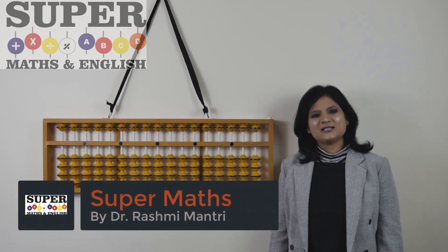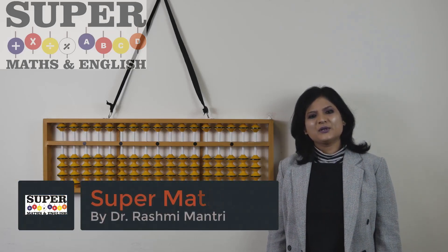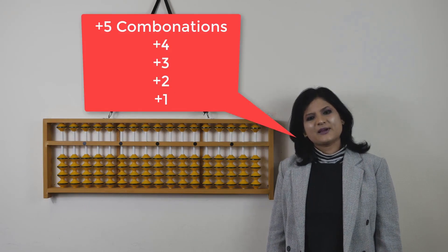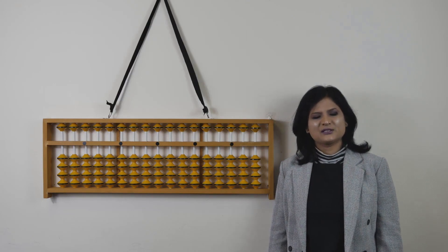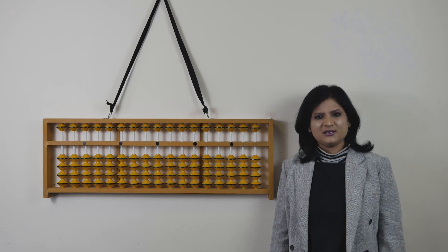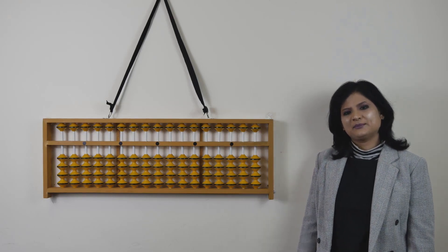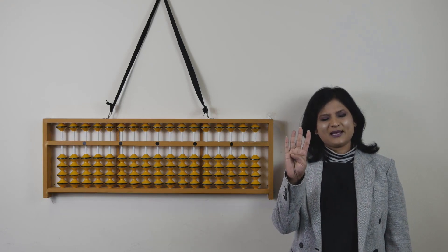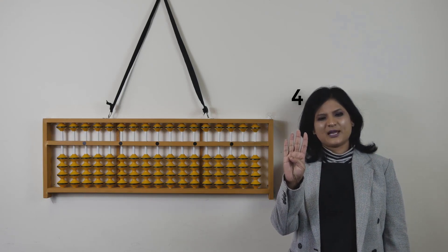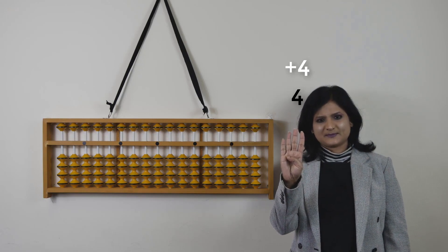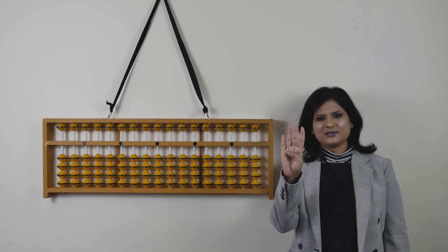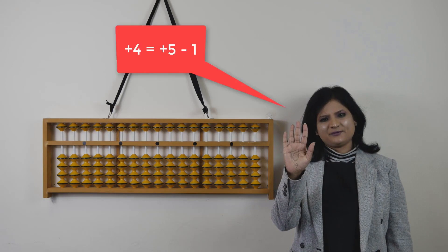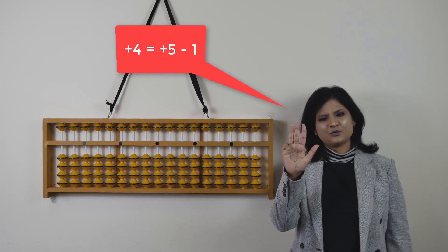Hi everybody. In this video I am going to show you the plus 5 combinations. Plus 5 combinations means whenever we have to add the number 5 in any calculation, that is called a plus 5 combination. So for example, I have 4 and I want to add another 4 to it, but I'm running out of fingers. So what I'll do is add 5, take away 1, to add 4.